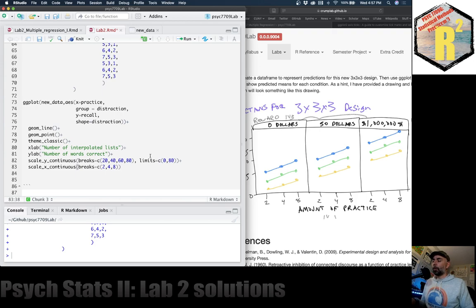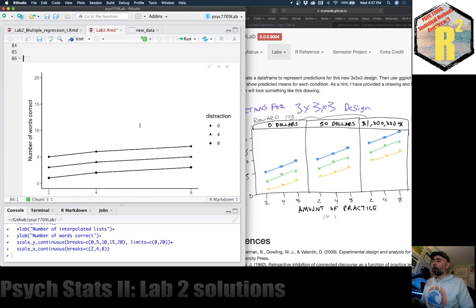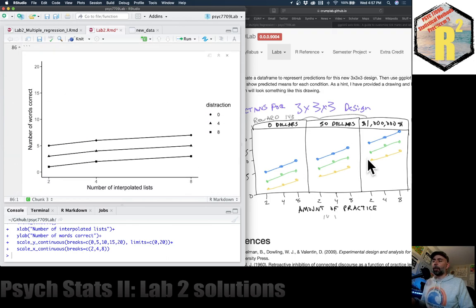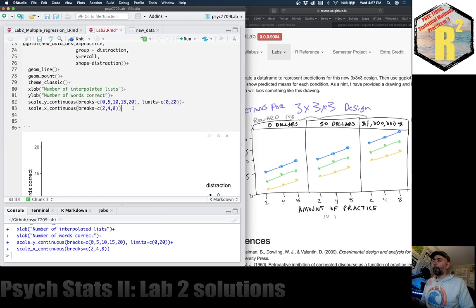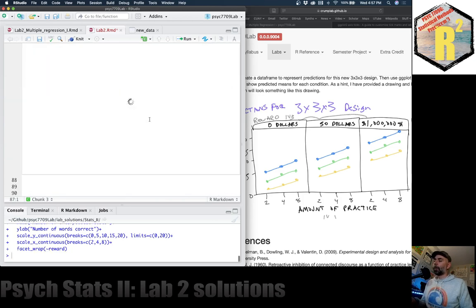One thing that's different about this data frame is that these values would represent means across subjects, not individual subject data. So we no longer need the stuff in here that's computing summary values. And we're probably going to have to change these to 0, let's do 5, 10, 20. Let's add a 15 in there too. That goes up by 5. Go all the way up to 20. Okay, I think that will do it. That's not exactly like this. We need to add a facet wrap. And we need to do by reward.